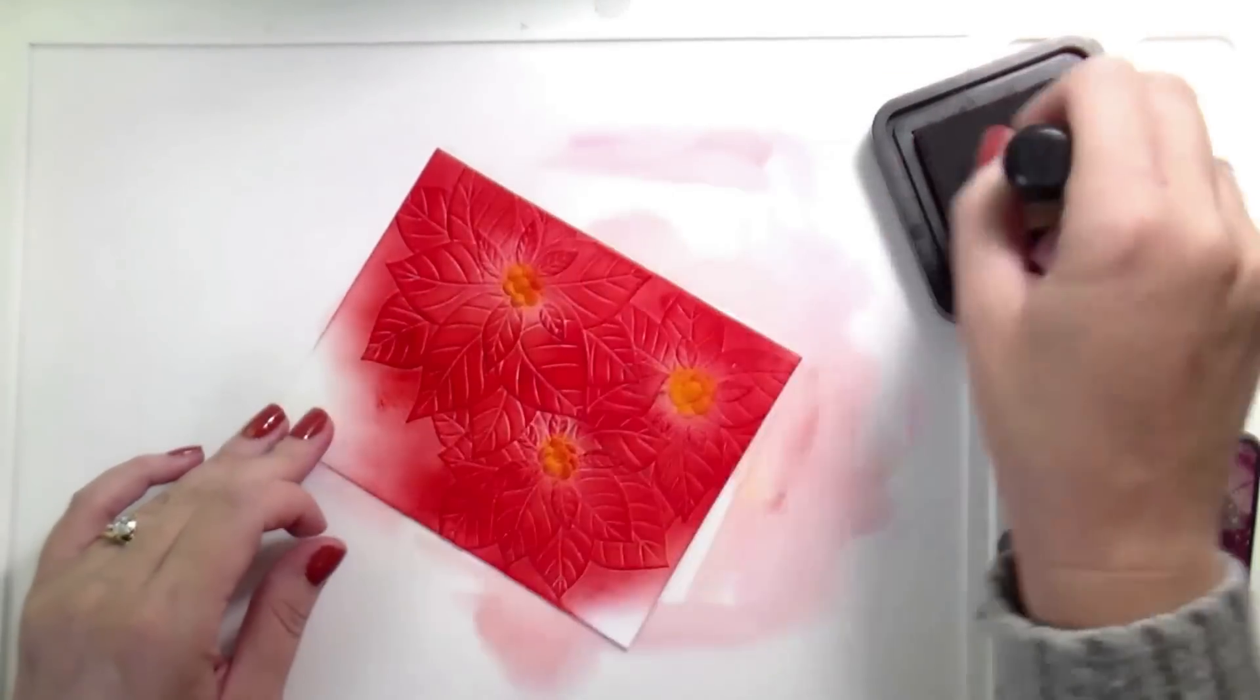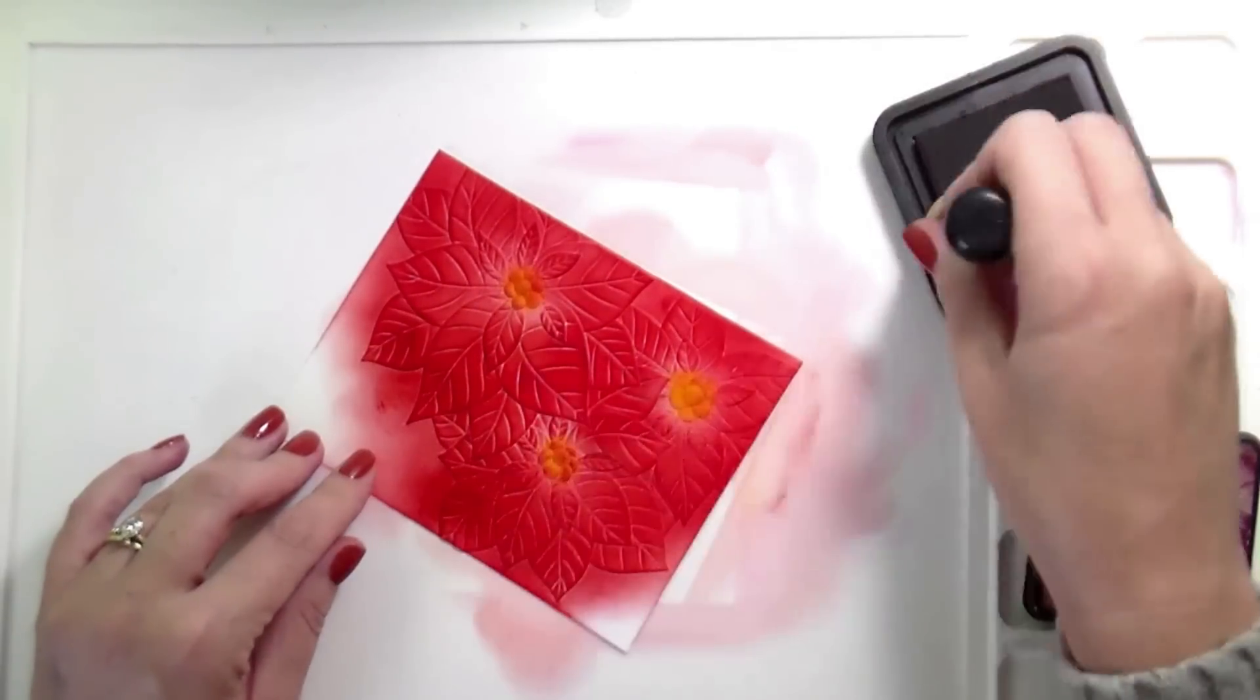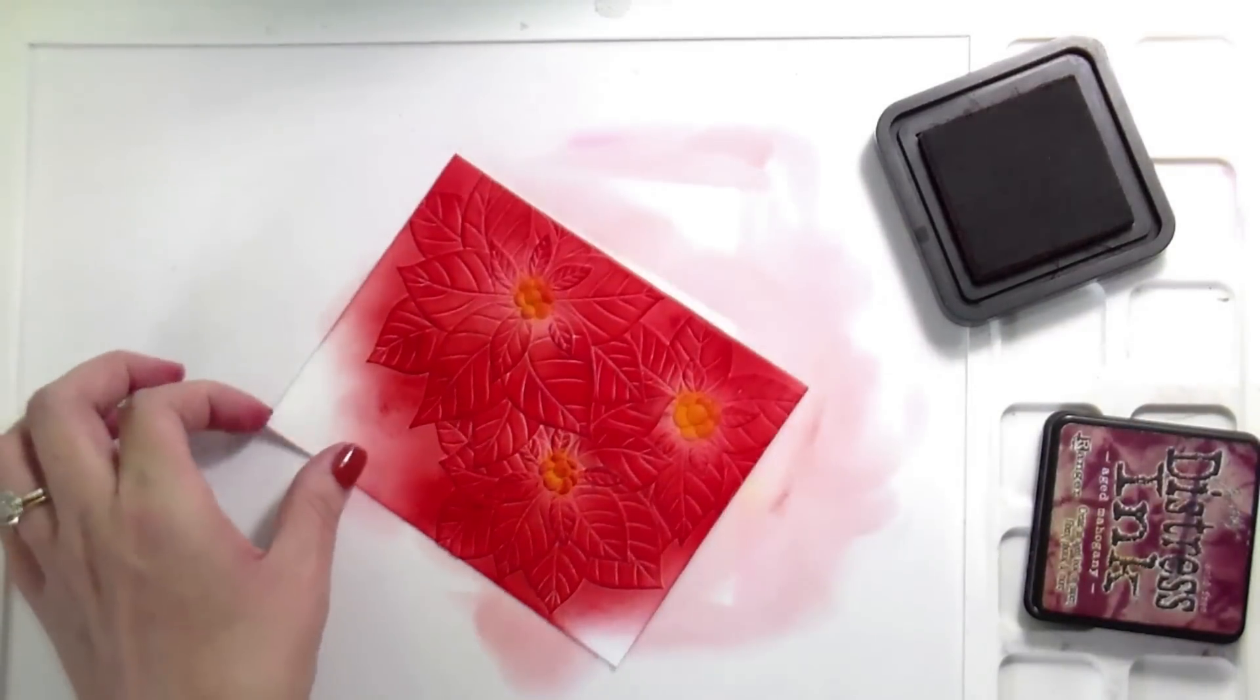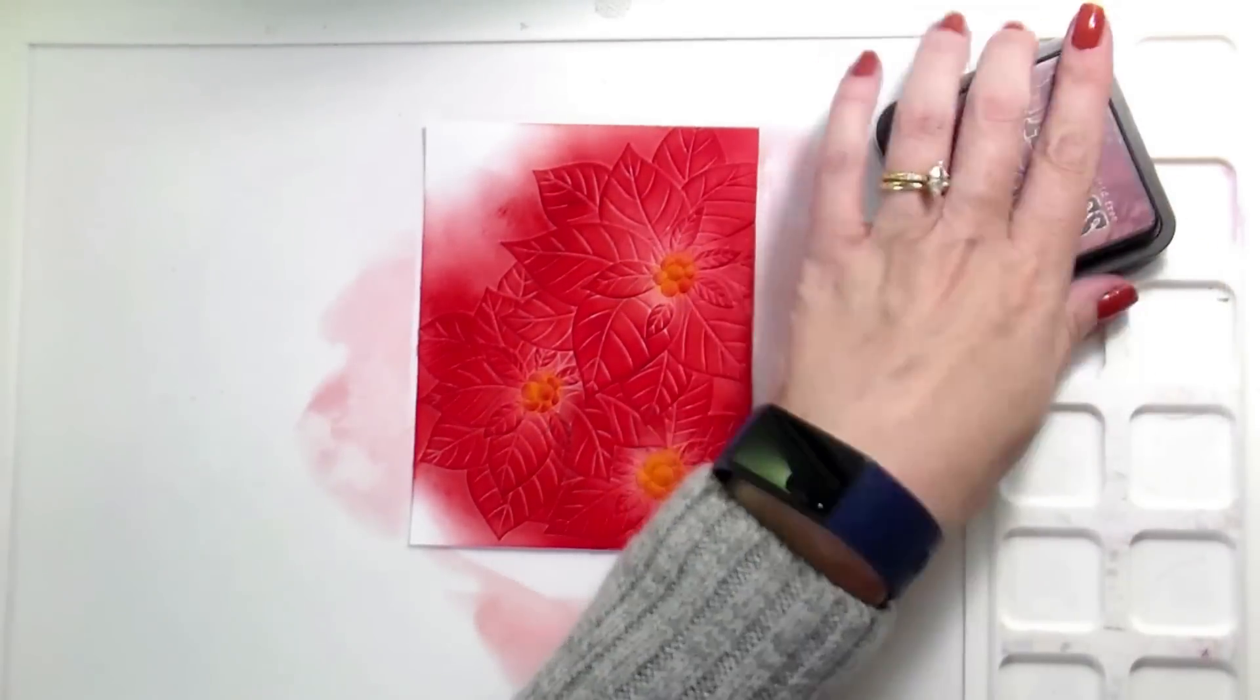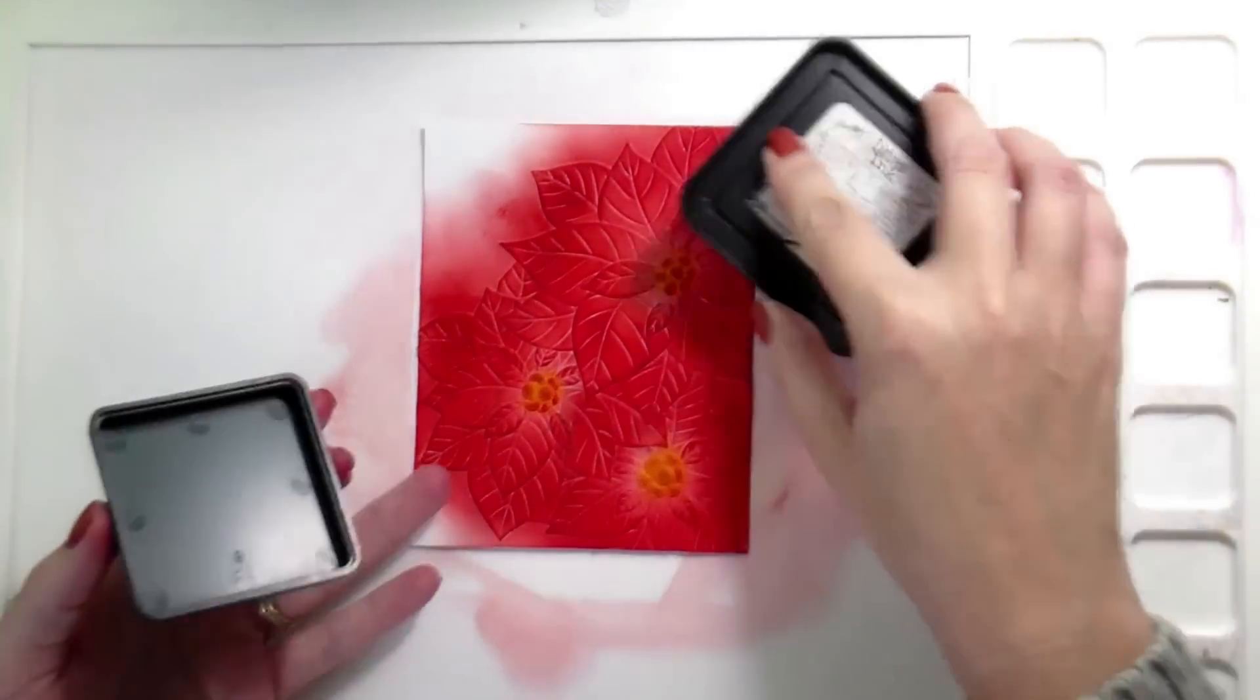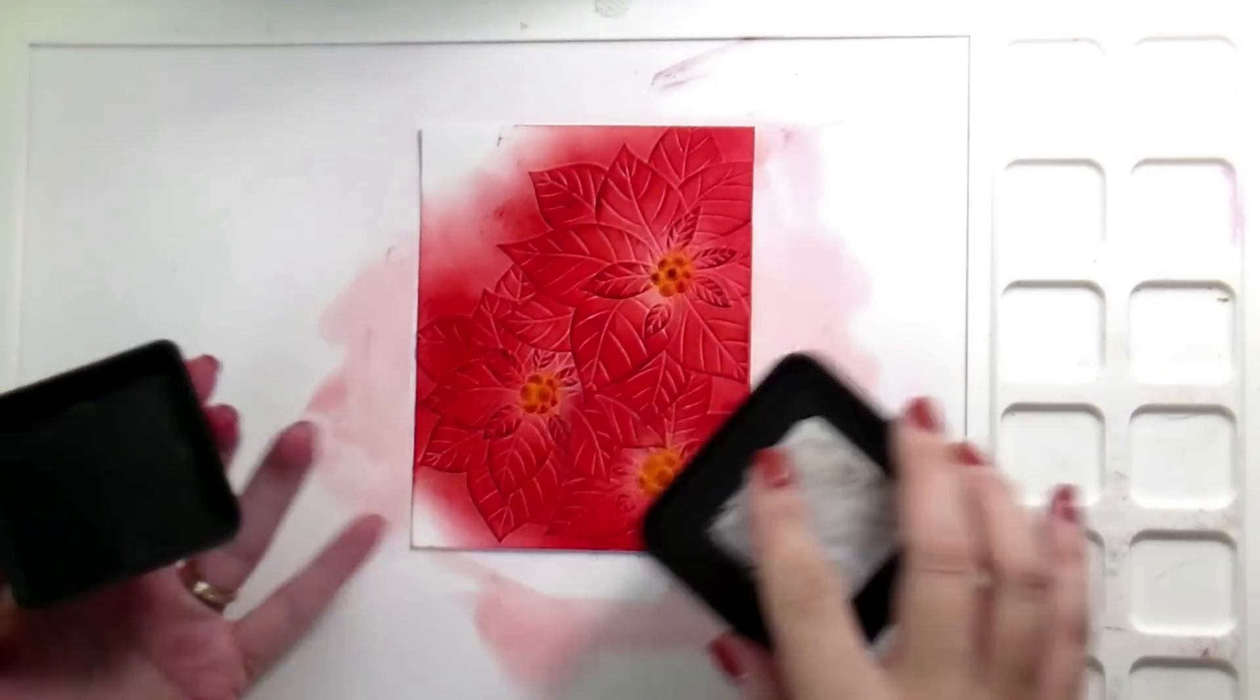And in order to get some dimension, there's two different ways that you can do this. One is more subtle. That's what I'm doing here. I'm going in with aged mahogany and the ink blending tool. And I'm just kind of rubbing it back and forth on the raised areas to get a little bit more dimension. The other way you can do it is taking your ink pad directly to your paper, and that is what I end up doing.